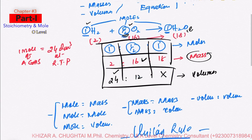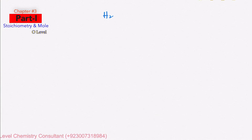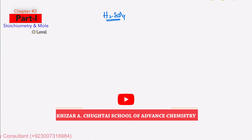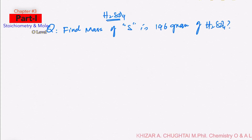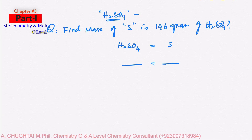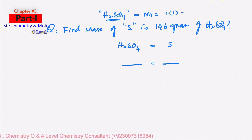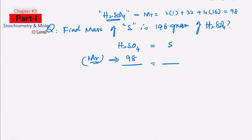We can compare three types of quantities — mole, mass, and volume — from the balanced chemical equation. Now, applying the unitary rule to a formula. For example: find the mass of sulfur in 196 grams of H₂SO₄. Write the equal sign; put sulfur on the right-hand side and H₂SO₄ on the left-hand side. The first information is reported from the formula. The Mr of H₂SO₄ = 2×1 + 32 + 4×16 = 98 grams per mole.